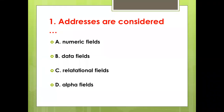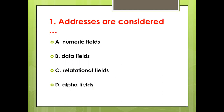First bit: Addresses are considered — Option A: Numeric field. Option B: Data field. Option C: Relational fields. Option D: Alpha fields. Answer: Option D, Alpha fields.